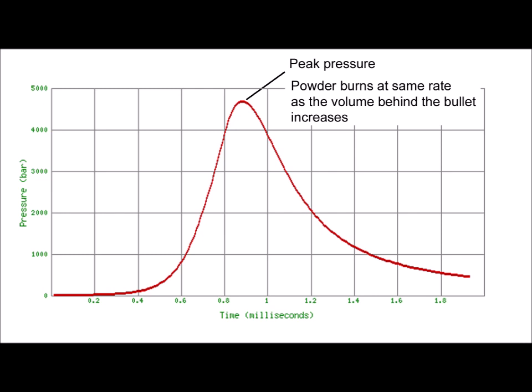This is a curve of the resultant chamber pressure as a function of time. On the left-hand side of the curve, the gases are being produced faster than the volume is increasing due to the movement of the bullet, so the pressure in the gases is increasing. At peak pressure, the bullet is moving fast enough that the volume behind the bullet is now keeping pace with the amount of gases being produced by the burning powder. After peak pressure, on the right-hand side of the curve, the bullet is still accelerating and the volume behind the bullet is increasing faster than the rate at which gases are being produced, and so the pressure starts to decrease.